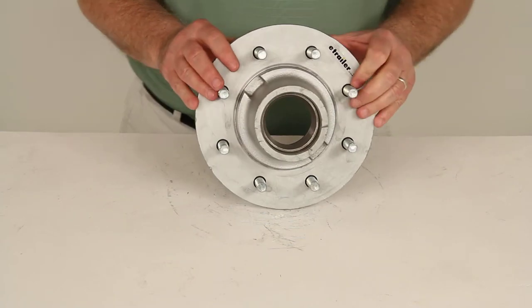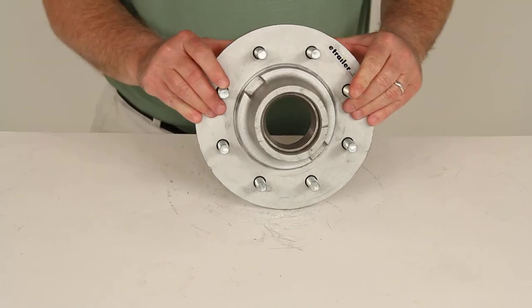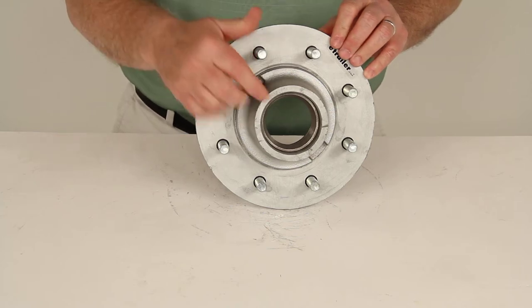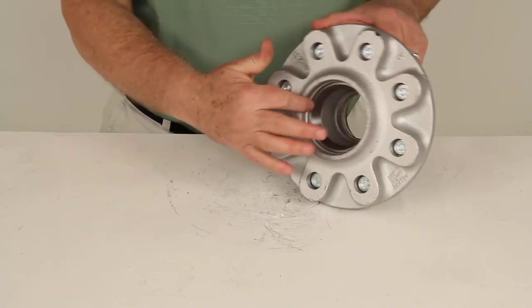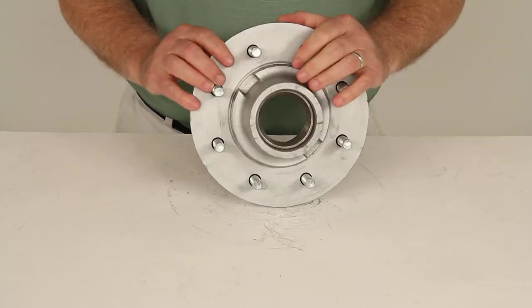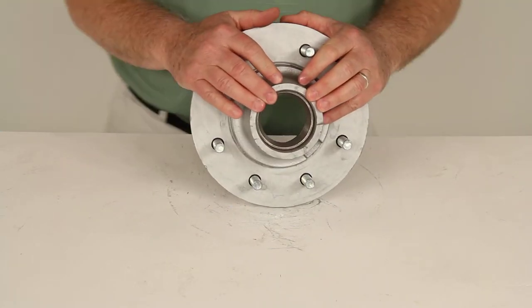Basically, this is a galvanized marine-grade trailer hub, which will fit on idler axles. It does include the inner and outer bearing races, which are press fit in there already, but it does not include any of the bearings, the grease seal, the grease cap, or the lug nuts.